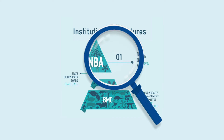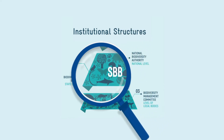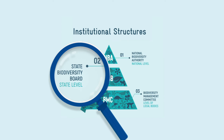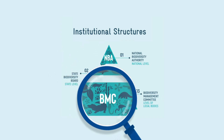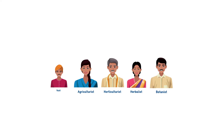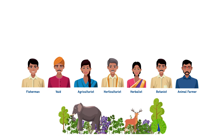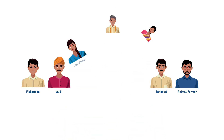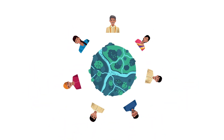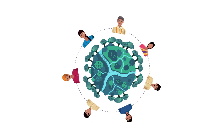The Biodiversity Act has established a three-tier structure for implementation. The NBA, the National Biodiversity Authority, is responsible for all matters at the national level. The SBBs, the State Biodiversity Boards, are responsible at the state level. And the BMCs, the Biodiversity Management Committees, have been established at every local body. The BMC consists of seven members who possess knowledge of biodiversity and are registered in the local voters list. The Act recognises local communities as custodians of biological resources as well as the traditional knowledge and practices associated with them.